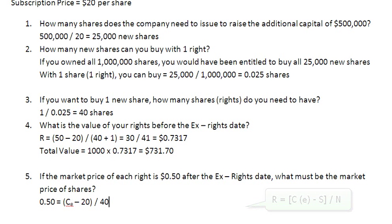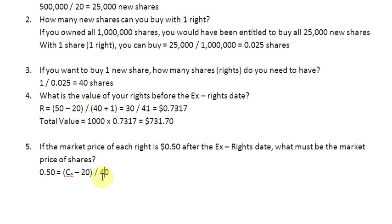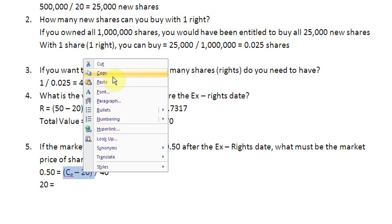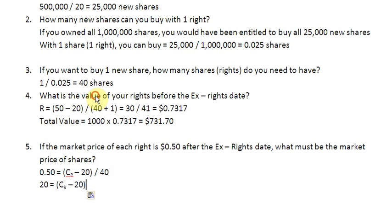We now solve the equation: 0.50 = (Ce − 20) ÷ 40. Carrying 40 to the left-hand side, 40 × 0.50 = 20, so we get 20 = Ce − 20. Therefore, the ex-rights price Ce = 20 + 20 = $40. That is the market price of shares after the ex-rights date. Thank you very much.